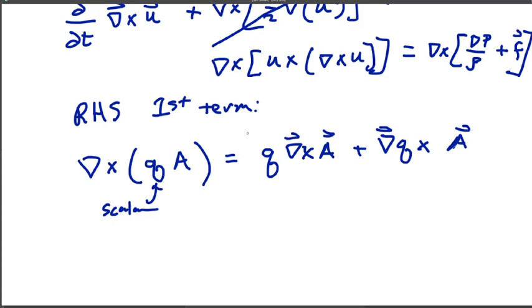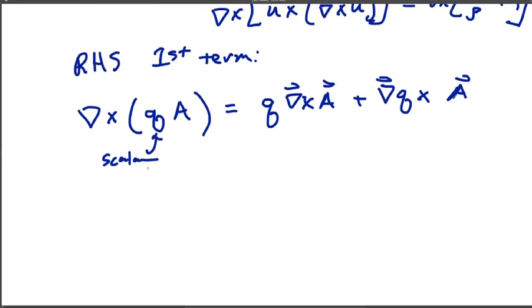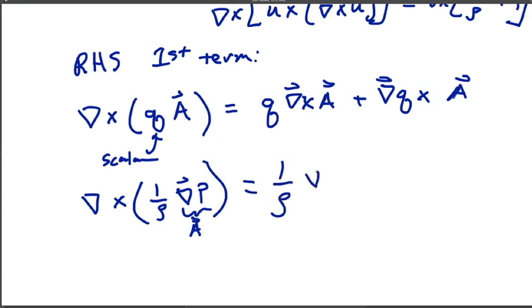Now, in this case, a is the gradient of pressure. So if we've got that first term on the right-hand side, this is del cross quantity one over rho. That's our q grad p vector. This is our a vector. All right. So we've got a one over rho curl cross grad p. That again is zero by vector identities. And then we've got the gradient of one over rho crossed with grad of p as the remaining term.